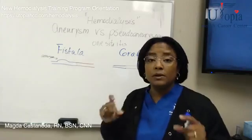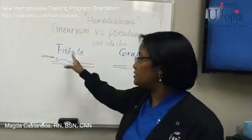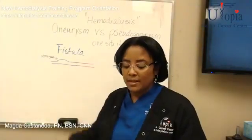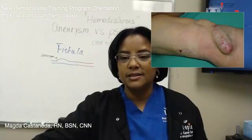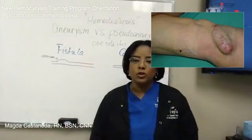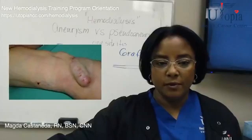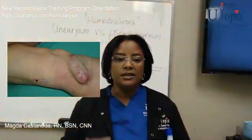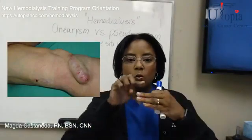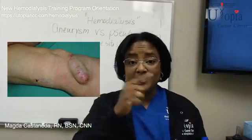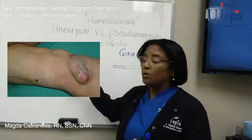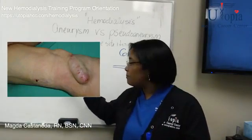So again, if the ballooning happens on a fistula, it's called an aneurysm. I'm going to show you a fistula with an aneurysm. In that picture on your screen, that is a fistula where the wall of the vessel has been weakened and the flow of the blood passing through it has made the wall of the vessel balloon out.